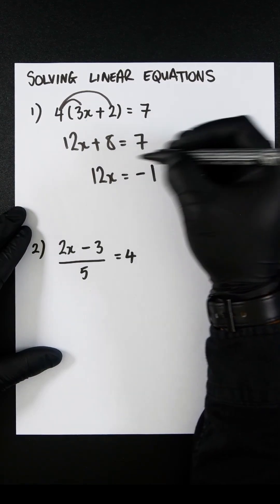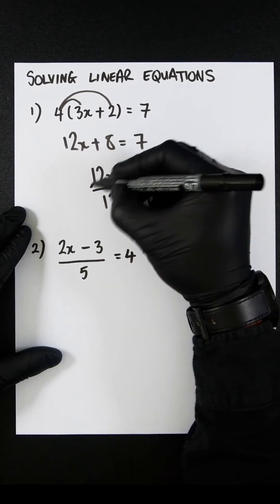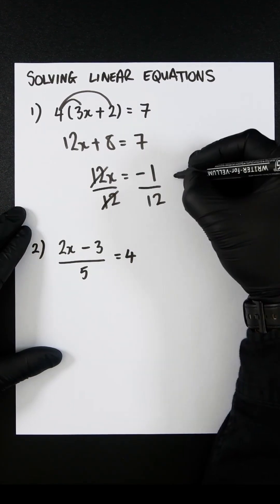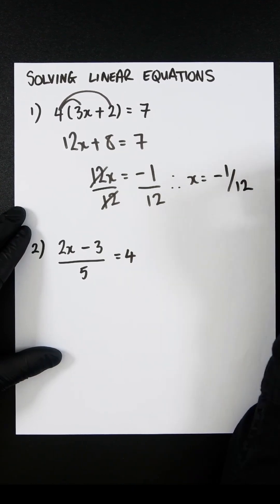If we now divide both sides by 12, we'll eliminate the 12 on this side, and therefore we will get x equals minus 1 twelfth.